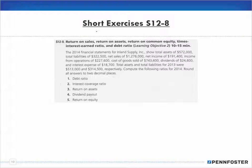For short exercise 12-8, we have return on sales, return on assets, return on common equity, times interest earned ratio, and the debt ratio. The 2014 financial statements showed assets of 572, liabilities of 322, net sales of 1,276, net income of 191, income from operations of 227, cost of goods sold of 743, dividends of 24, and interest expense of 18. Total assets and liabilities for 2013 were 513 and 314 respectively. Compute the ratios for 2014, rounding all answers to two decimal places.